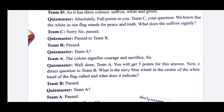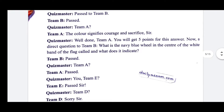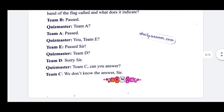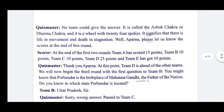Team A passes. Team E passes. Team D says sorry. Team C says: We don't know the answer, sir. No team could give the answer. It is called the Ashoka Chakra or Dharma Chakra. It is the wheel with 24 spokes. It signifies that there is life in movement and death in stagnation.